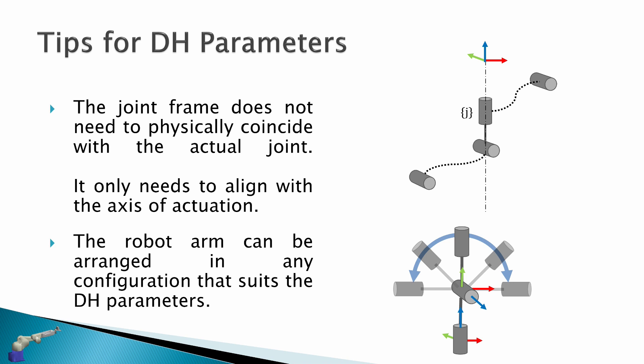Second, the robot arm can be arranged in any configuration that suits the DH parameters. The robot configuration should suit the DH parameters, not the other way around. We can put this joint in any location around its previous joint, but we just pick the one that suits the DH parameter configuration.